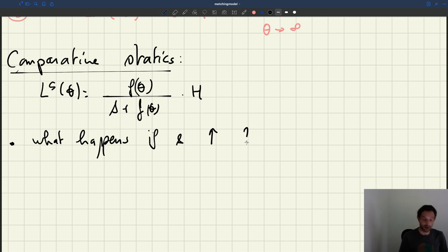Another comparative statics we could do is what happens if h goes up. So h is another parameter of the model. So imagine that suddenly more people enter the labor force. What can we expect for the labor supply?